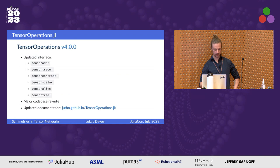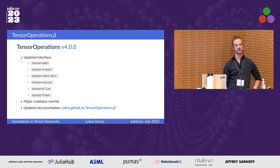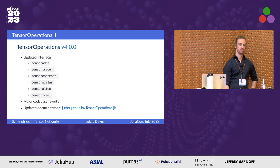One thing I'm very excited to present is that we announced and released version 4 of TensorOperations last week. I want to quickly go over some of the things we changed. One of the first things is a general update of our interface and also of the documentation — really do go have a look. We put a lot of time and effort in to make it very easy for people to see what's going on, and also very easy for developers to plug in their own tensor or array-like types.